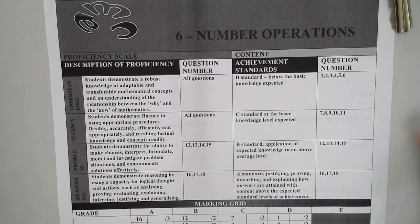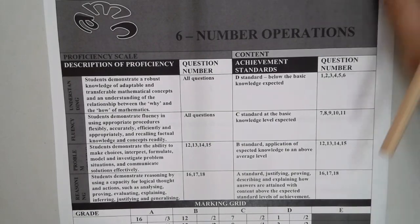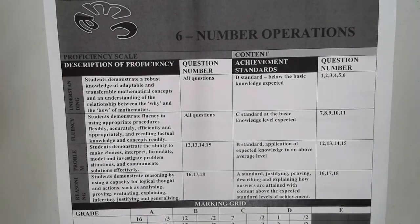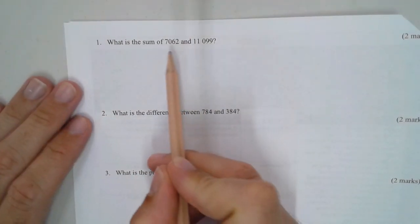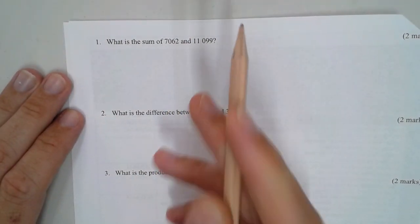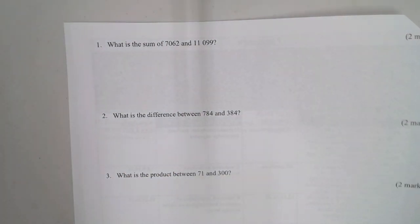All right, so we're looking at the Year 6 number operations exam and how you can get 100% of these questions. Number one: what is the sum of 7062 and 11,099? The sum means addition.